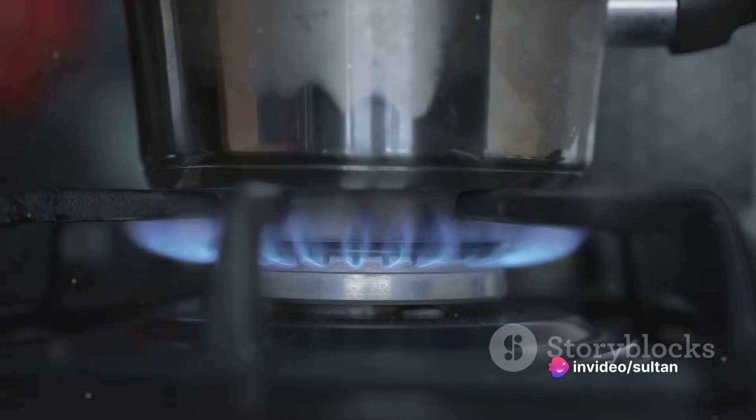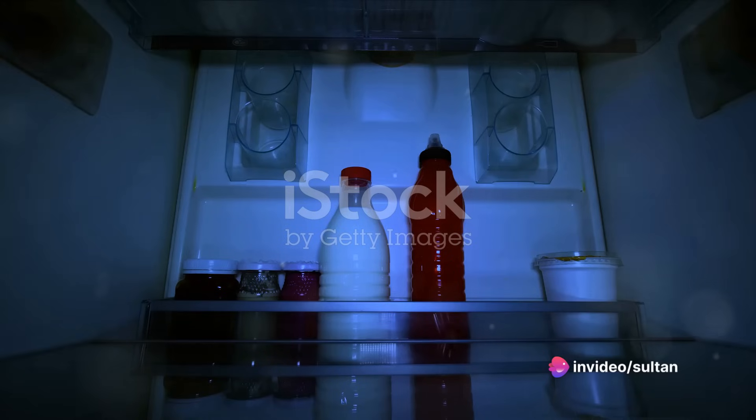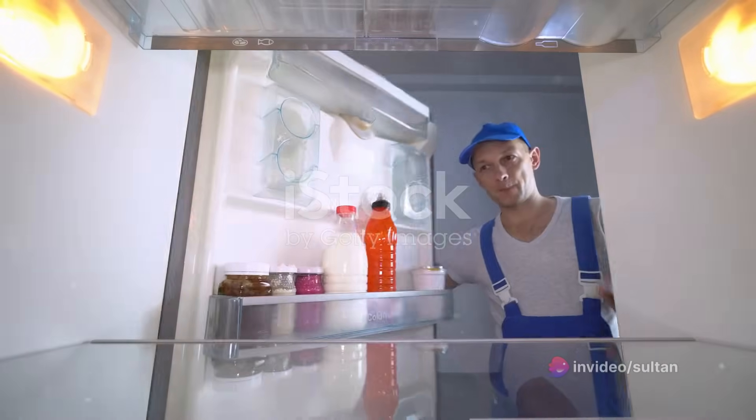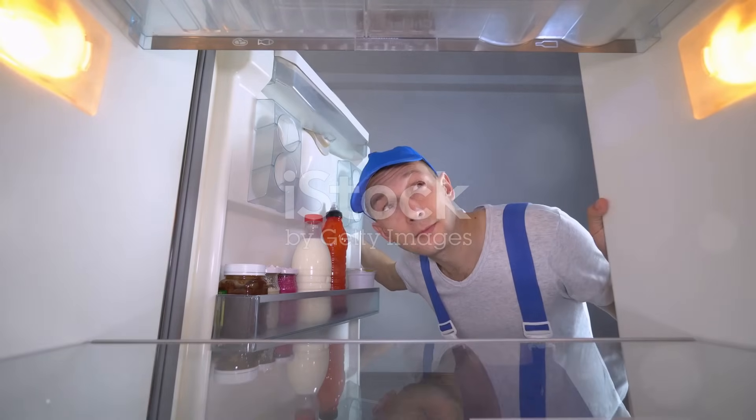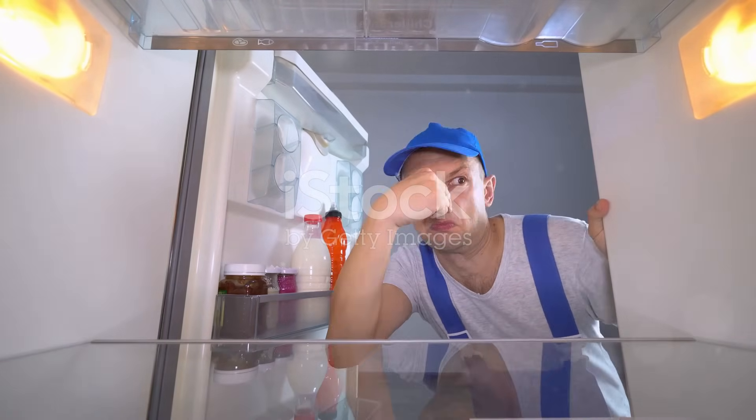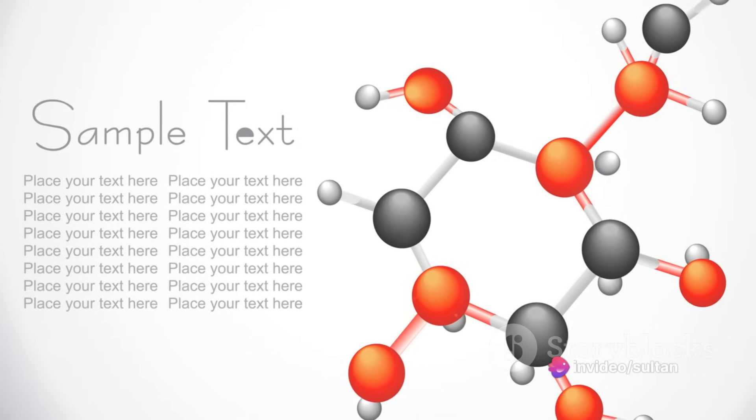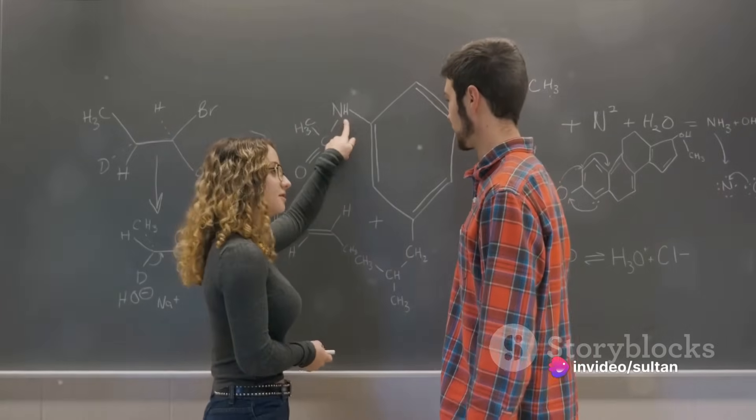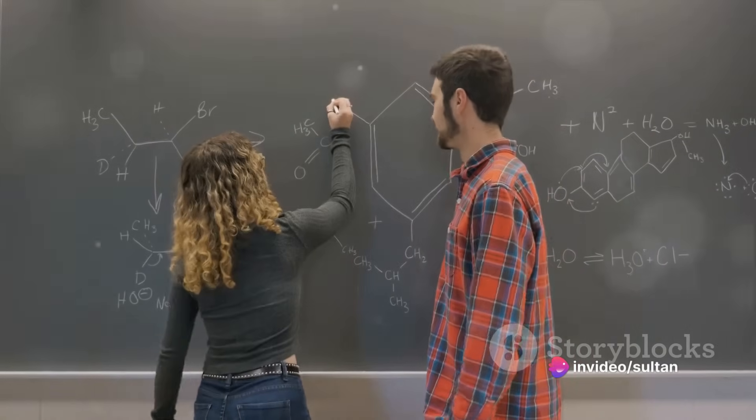Substitution reactions are broadly classified into two types based on the mechanism of the reaction, SN1 and SN2. SN stands for nucleophilic substitution, and the numbers 1 and 2 refer to the steps involved in the reaction. In an SN1 reaction, the leaving group leaves first, creating a carbocation, which is then attacked by the nucleophile.